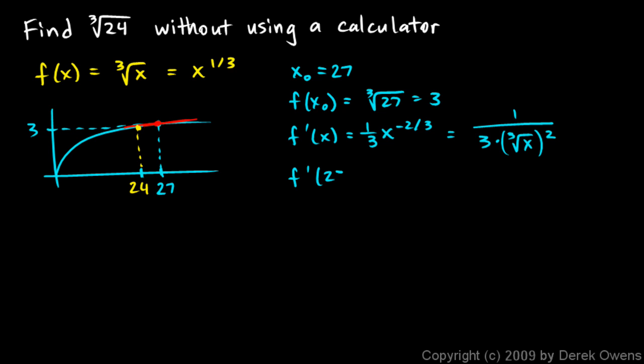And then f'(27), which is the slope right here that I've drawn in red, the slope of this segment in red, that f'(27) is going to be 1 over 3 times the cubed root of 27 squared. And you can figure that out. The cubed root of 27 is 3. And then 3 squared is 9. And 3 times 9 is 27. So this is 1 over 27. So that's the slope at this point.